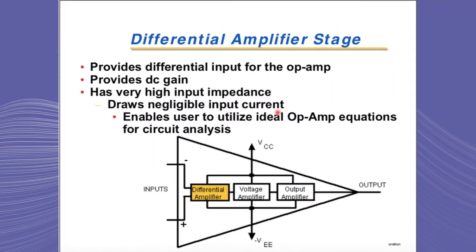Here you can see the block diagram of a simple general-purpose amplifier with three stages. The first stage, the differential input stage, must have very high input impedance. This causes the op-amp to draw very negligible amounts of input current. The very small input current enables the user to utilize ideal op-amp equations for circuit analysis purposes. This stage also provides the DC gain of the amplifier.